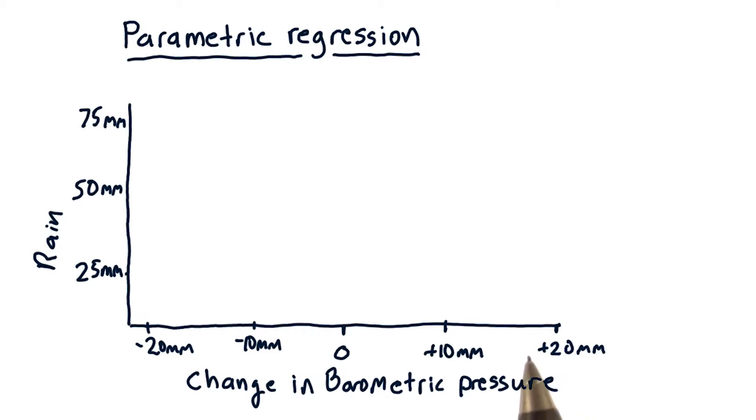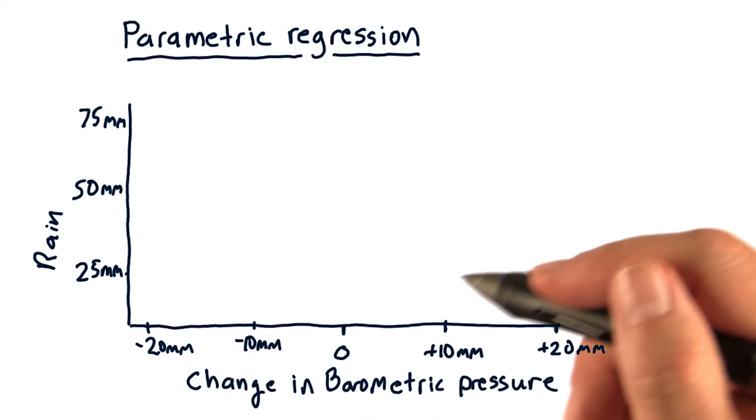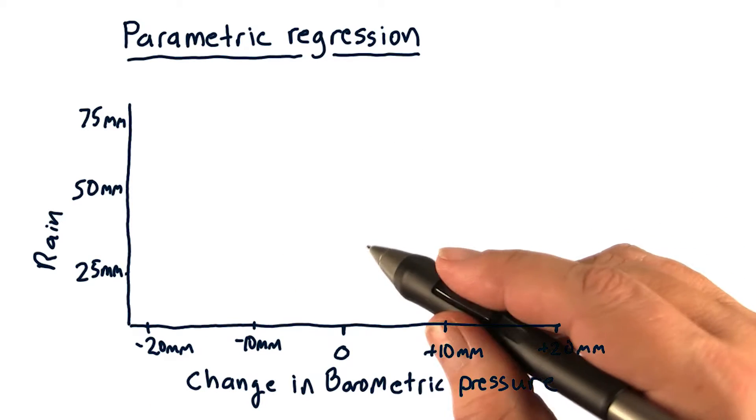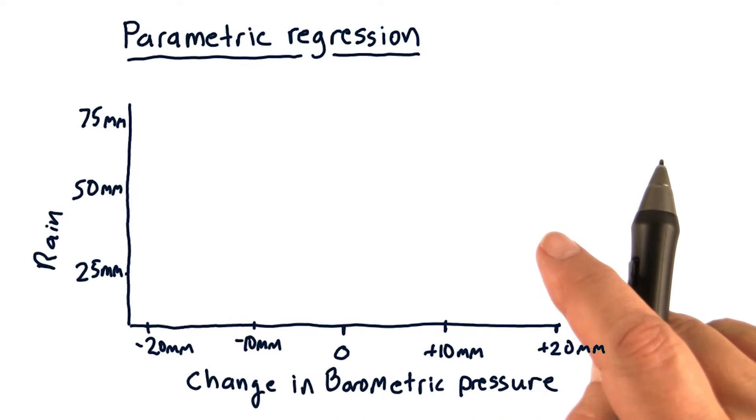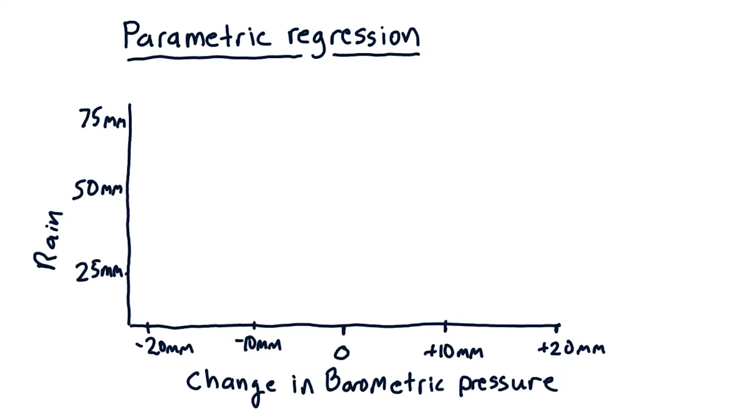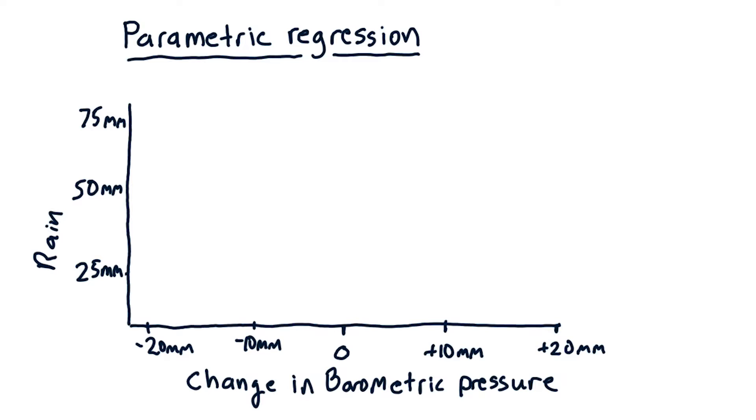As you may know, if barometric pressure declines, that usually means there's bad weather coming and it's going to rain. And when barometric pressure increases, it typically means that we've got good weather coming.